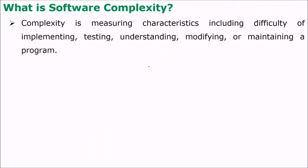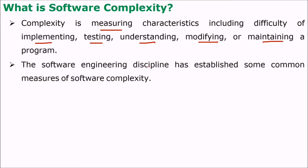What is software complexity? Complexity is measuring the characteristics which include the difficulty of implementing, testing, understanding, modifying or maintaining a program or the software.